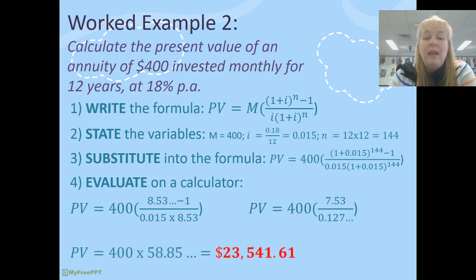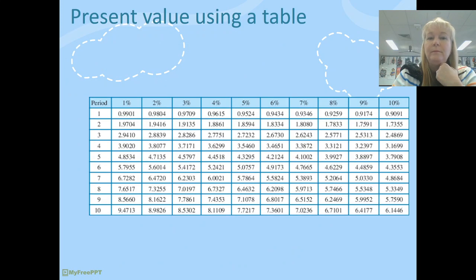And then at the very end, we're going to find that the present value of that particular investment was $23,541.61. So you could test, once again, test that for logic. Do $400 of payments. There's 144 of them. Multiply that out. What you should end up with is a smaller amount of your present value here.